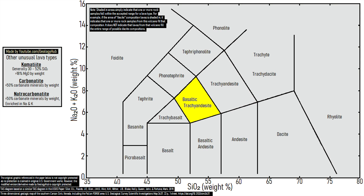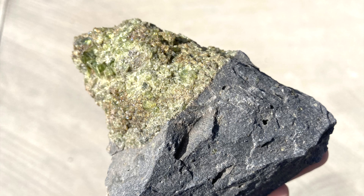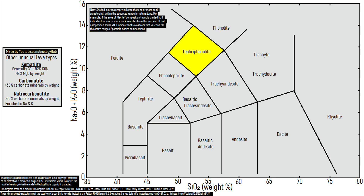Basaltic trachyandesite is difficult to initially identify, but looks like trachyandesite with less feldspar and a slightly darker color. Phonotephrite has a medium to dark gray color and generally has common white colored feldspar crystals and minimal potassium feldspar. Tephri-phonolite has a negligibly darker color than phonotephrite, contains more feldspar overall, and at least half of its feldspar crystals are potassium-rich with a pink tint.